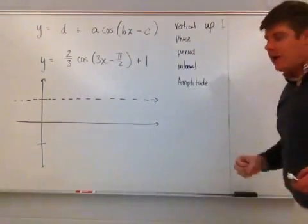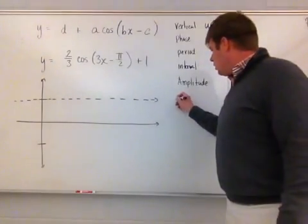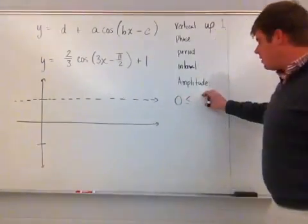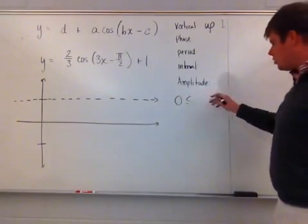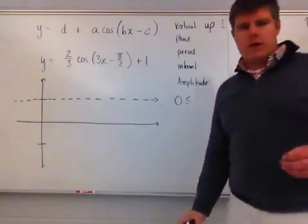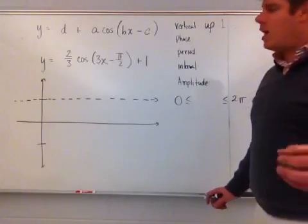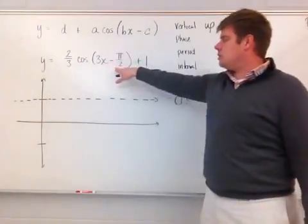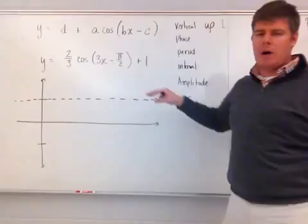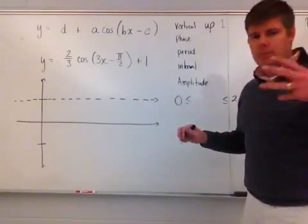The original cosine function goes from zero, and my domain values are going to go from zero to two pi. The original function is just cosine of x, which states that x goes from zero to two pi. This value in here now changes it. I now have three x minus pi over two, so that is changing my x domain.